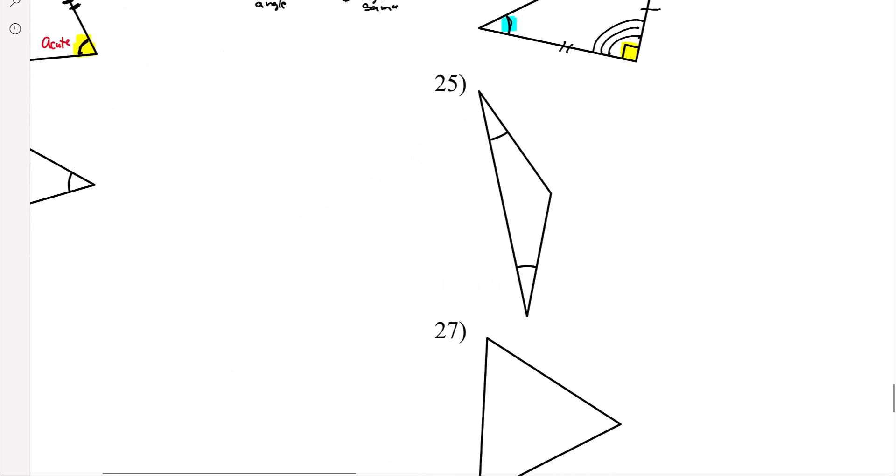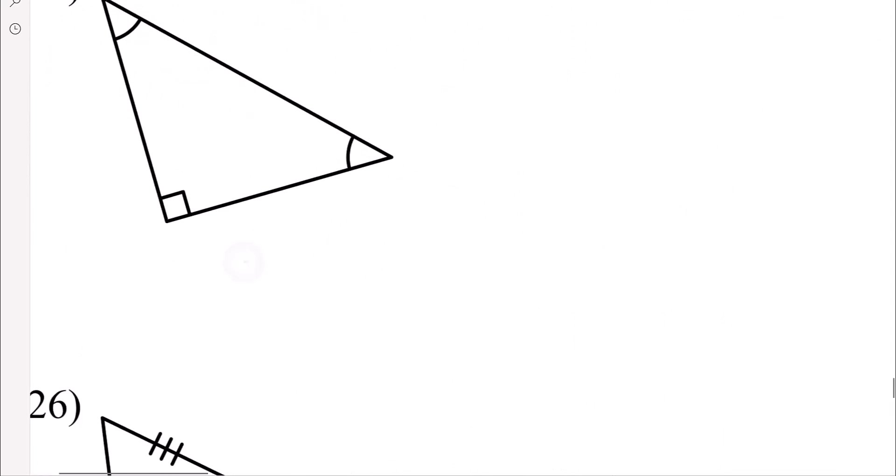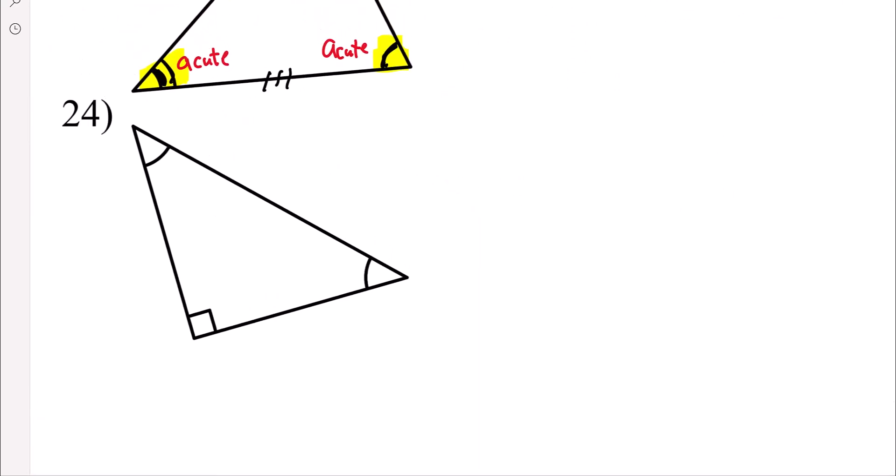Notice another right. So we can go ahead and put right. And then look it. Both of those are one arc. That means this side and this side are the same. So that would be a right isosceles.